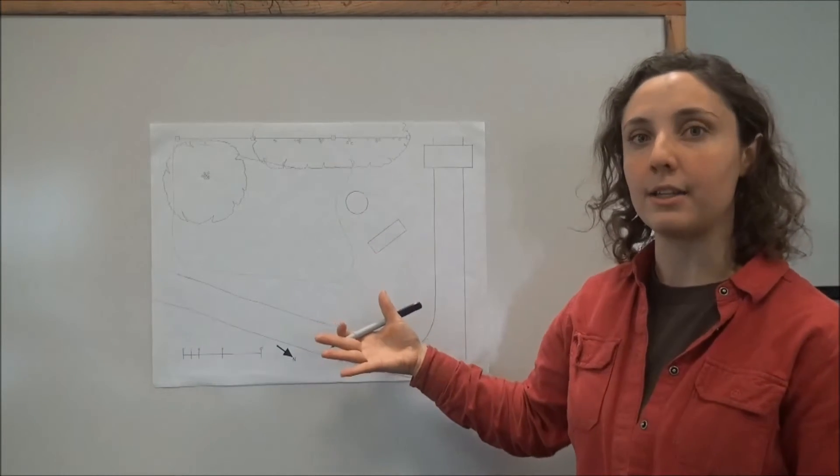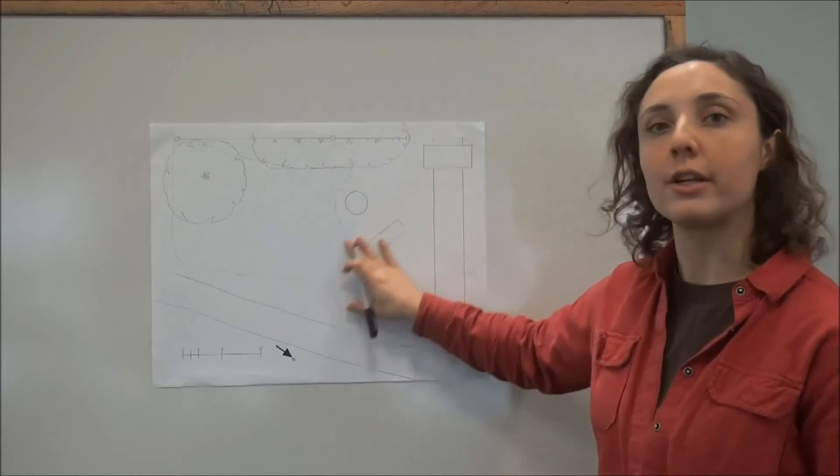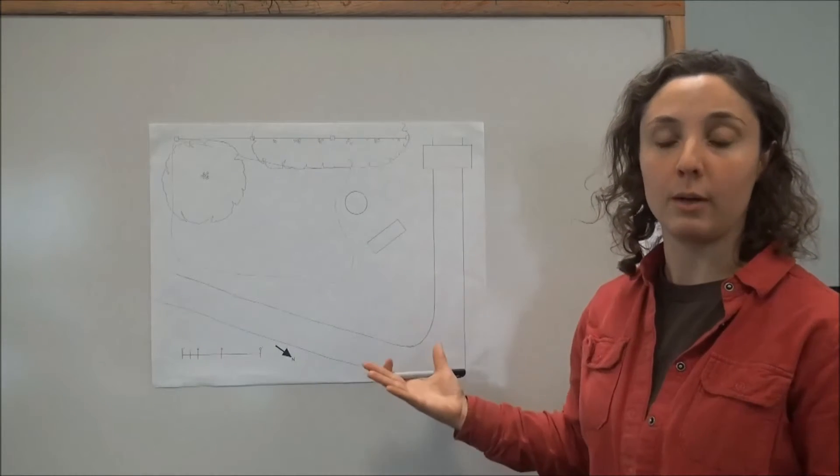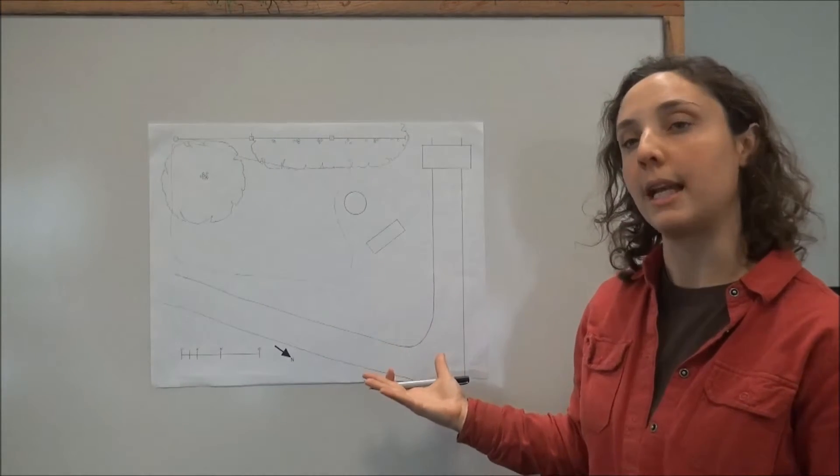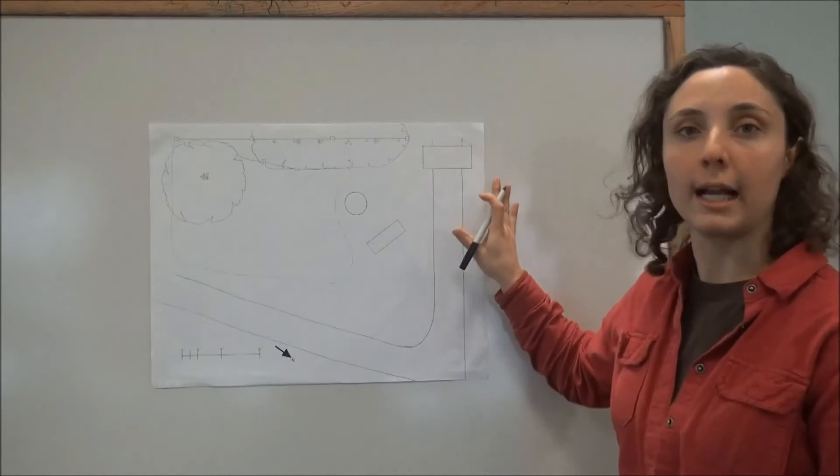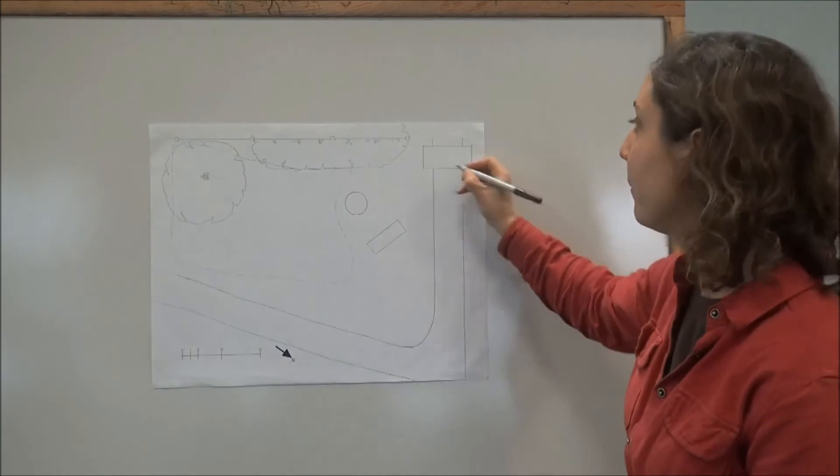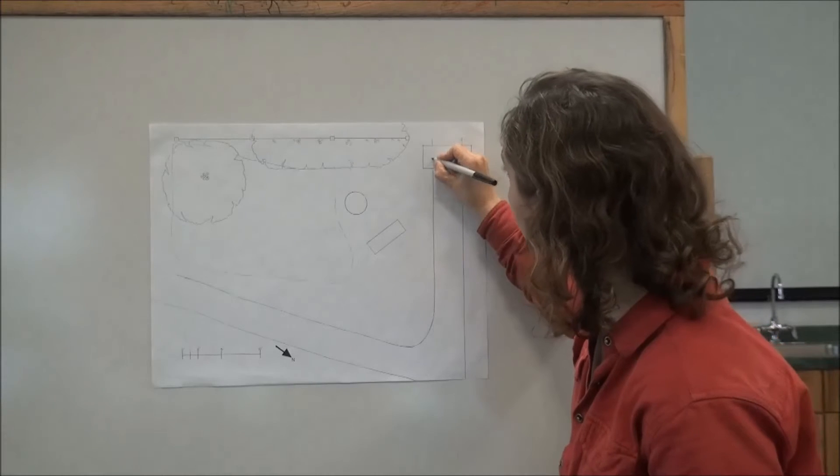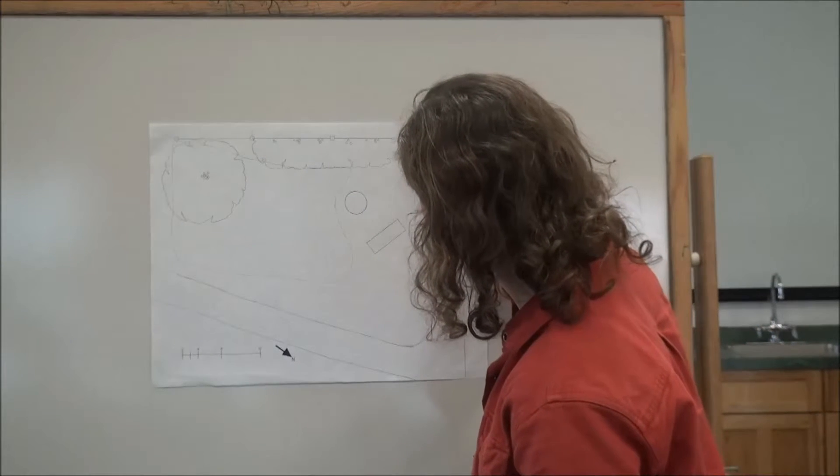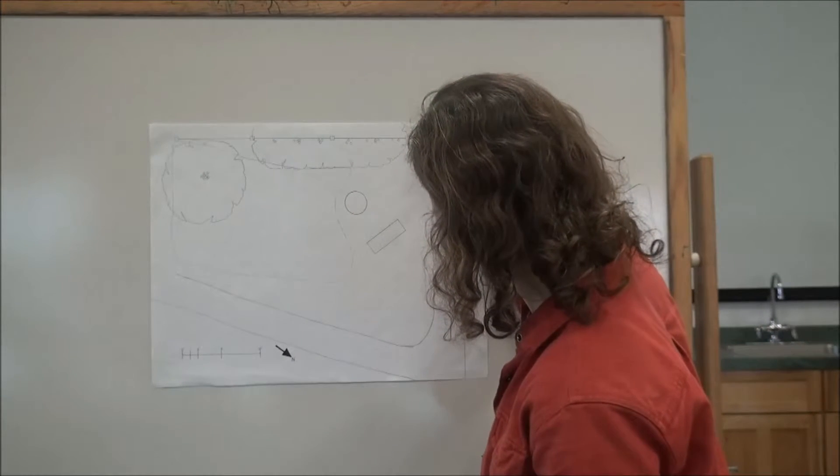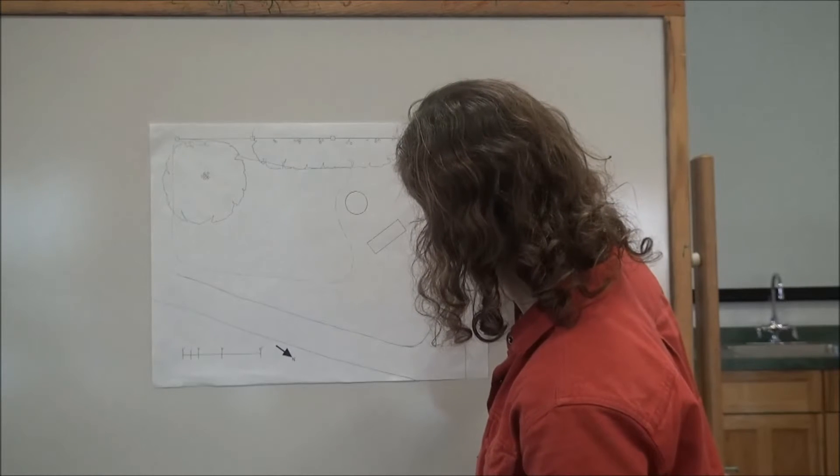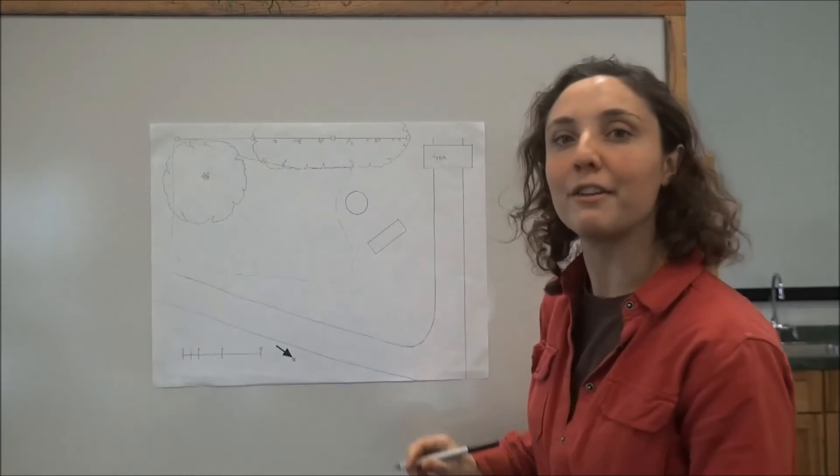So since this base map is going to be what I'm going to use to layer all of my analyses on top of it, I want to make sure it's very clear and that I can understand what I have. I have all the elements that I need on it, so I'm going to just make sure I label all the elements on my map and I use very clear handwriting if possible, or I get a friend to do it if I don't have clear handwriting.